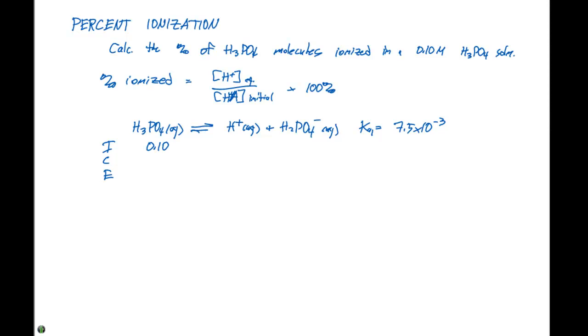Initially, we have 0.10 molar for H3PO4 and zero for both H+ and H2PO4-. Our change in concentration is minus x, plus x, and plus x, since we have a 1:1:1 mole ratio. That gives us equilibrium concentrations of 0.10 minus x, x, and x.